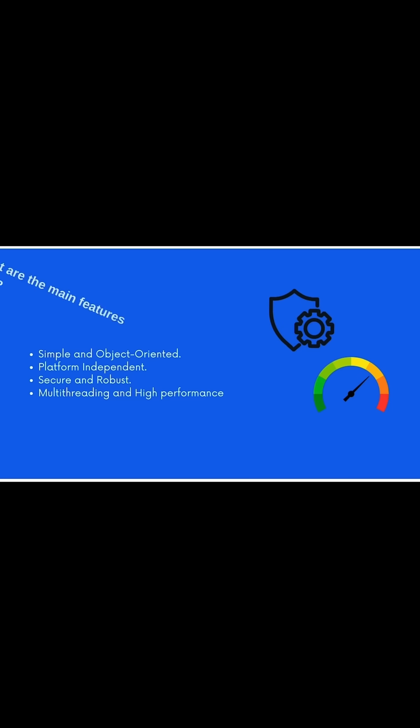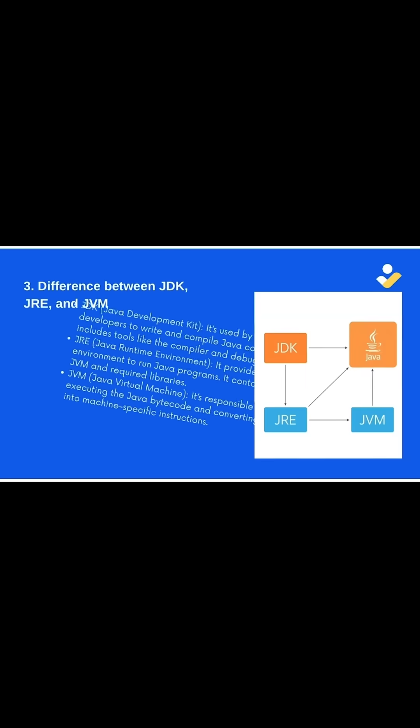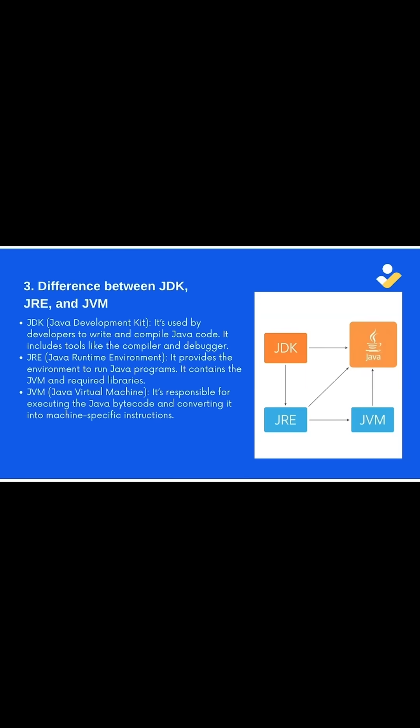Question 3: what is the difference between JDK, JRE, and JVM? These three terms are the core components of the Java environment. JDK, or Java Development Kit, is used by developers to write and compile Java code — it includes tools like the compiler and debugger. JRE, or Java Runtime Environment, provides the environment to run Java programs and contains the JVM and required libraries.